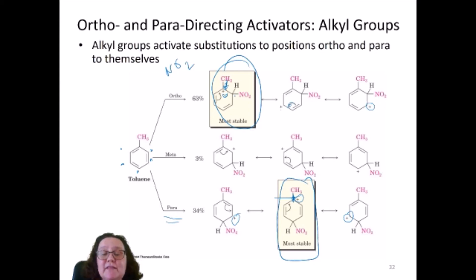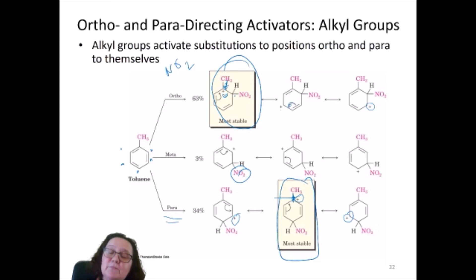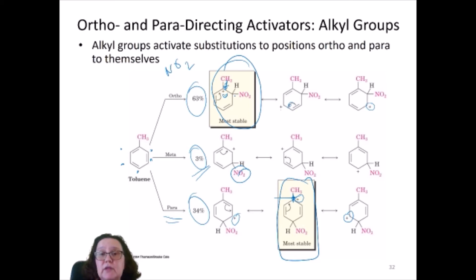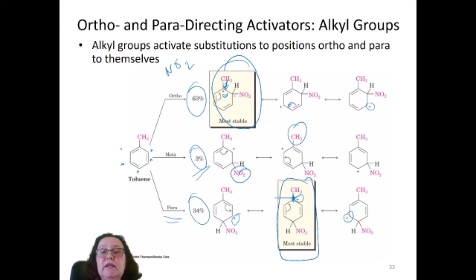If you look at the meta position — the nitro group entering the meta position — the three carbocations you form, none of them is particularly stable. None of the carbocations formed has the positive charge on the carbon adjacent to the methyl group, so there's nothing that stabilizes those carbocations. That meta intermediate is less favorable. If you look at the percentages of products formed, the ortho and para products are the most abundant, and barely any meta compound is formed, because none of the carbocations formed benefits from having that methyl group adjacent.